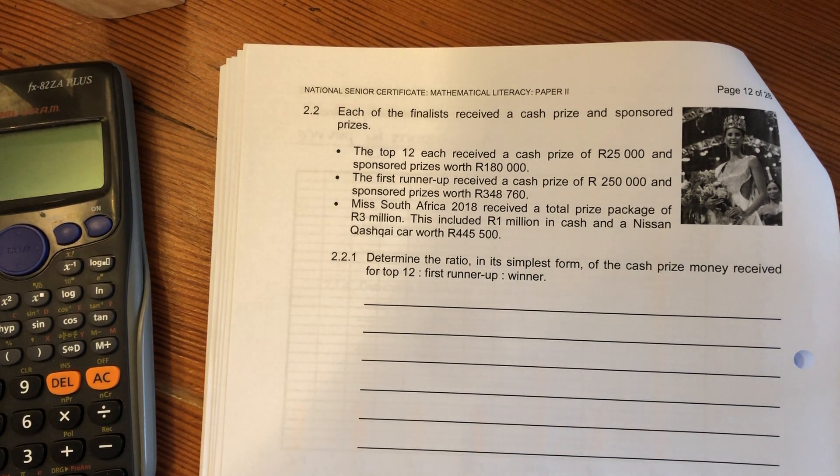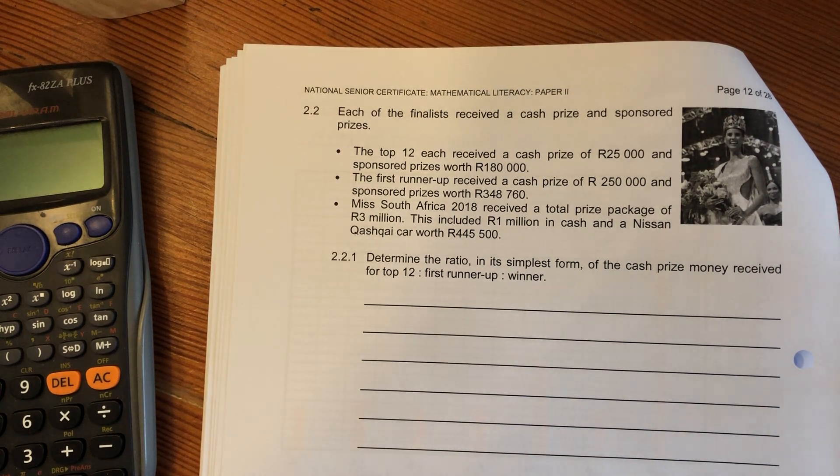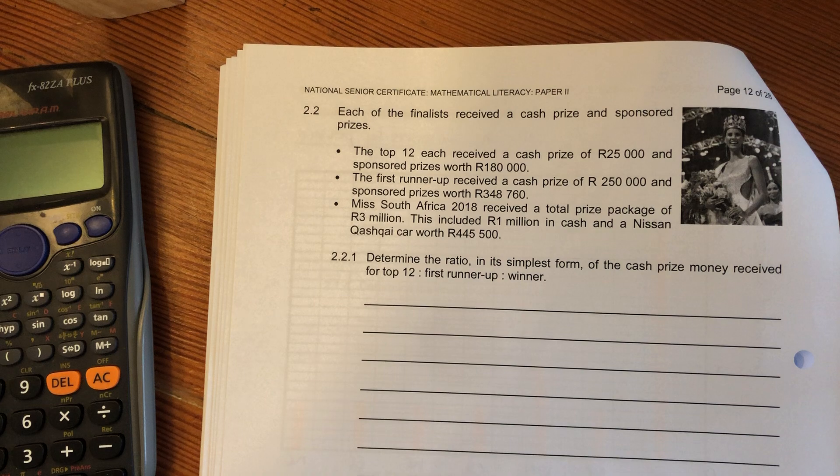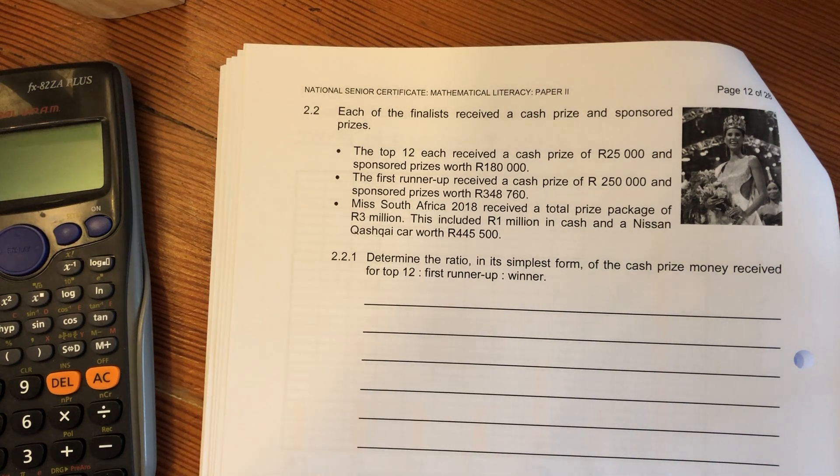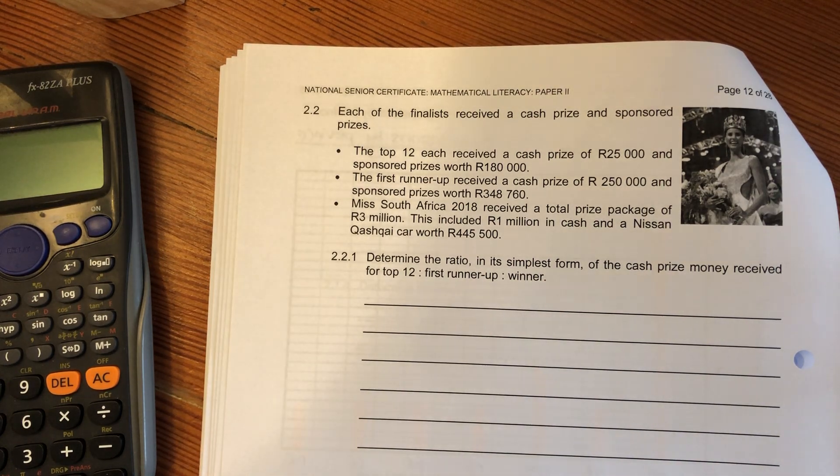The first runner-up's sponsored prizes were worth R348,760. Miss South Africa 2018 received a total prize package of 3 million. This included 1 million in cash and a Nissan car worth R445,500.